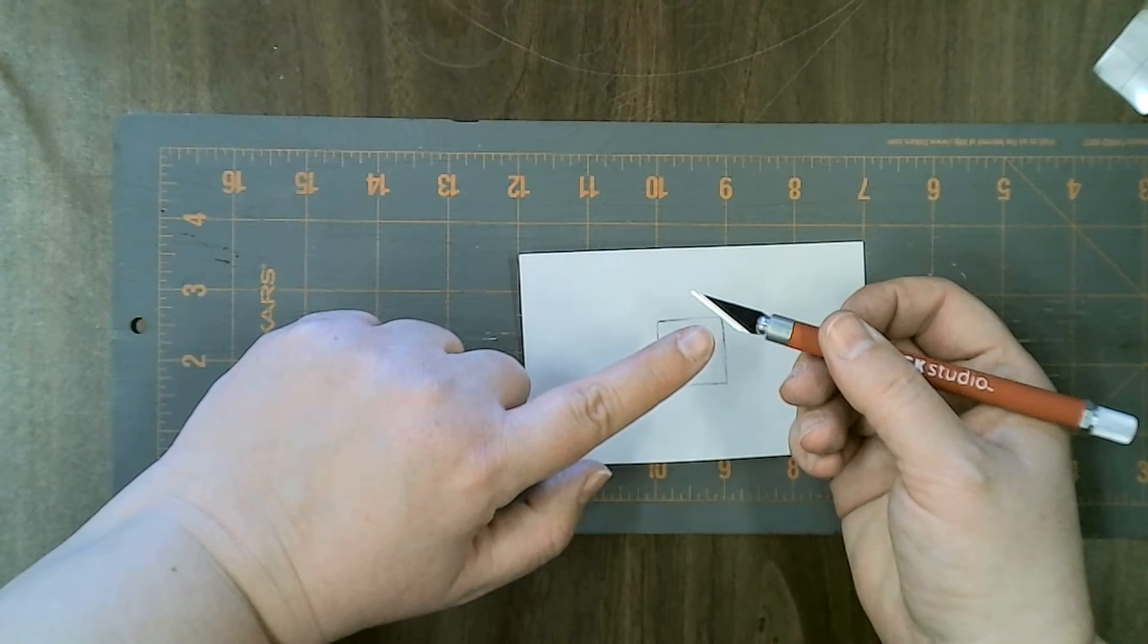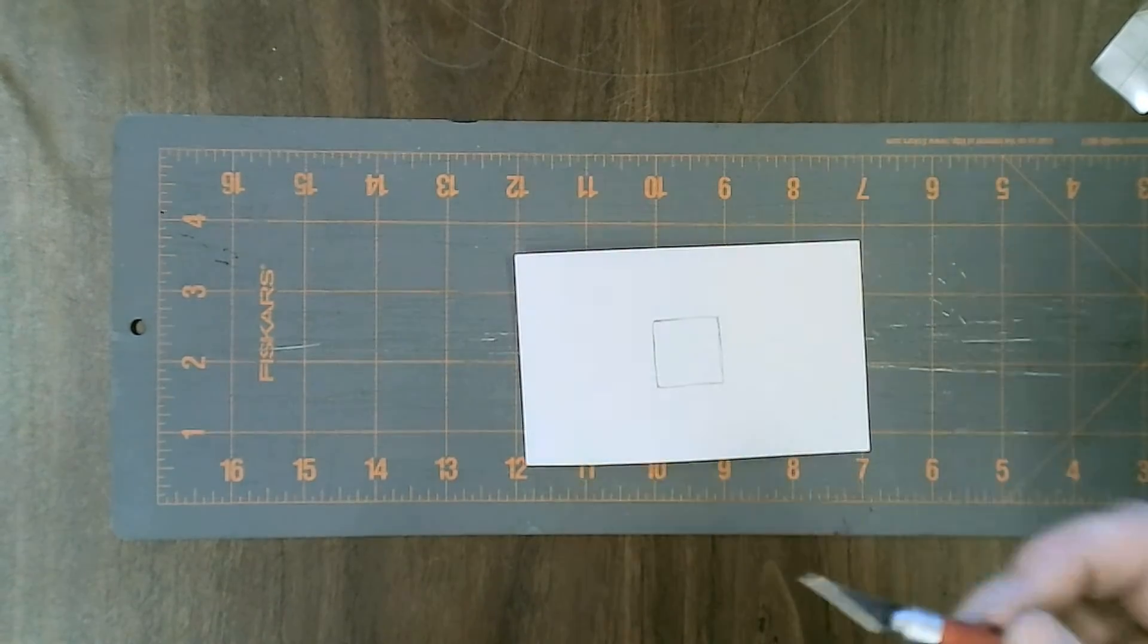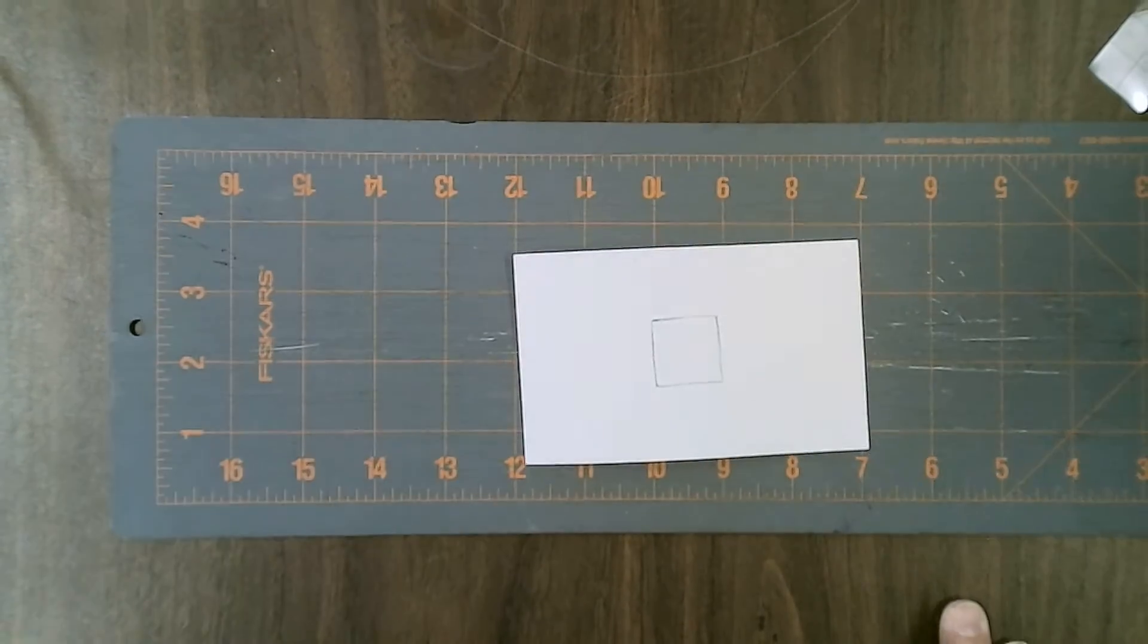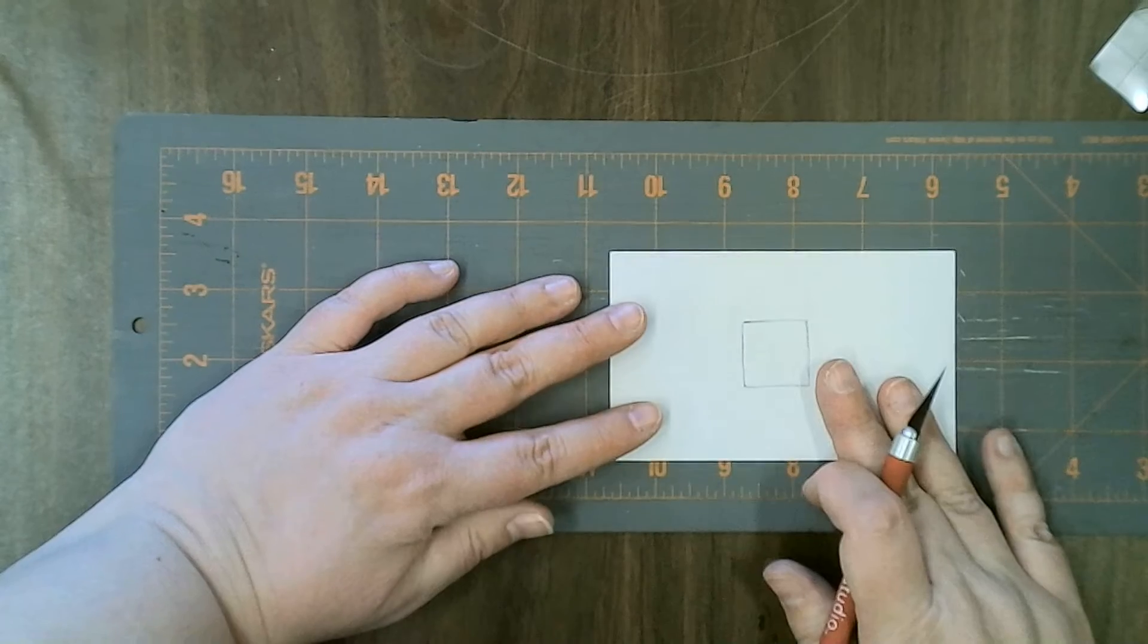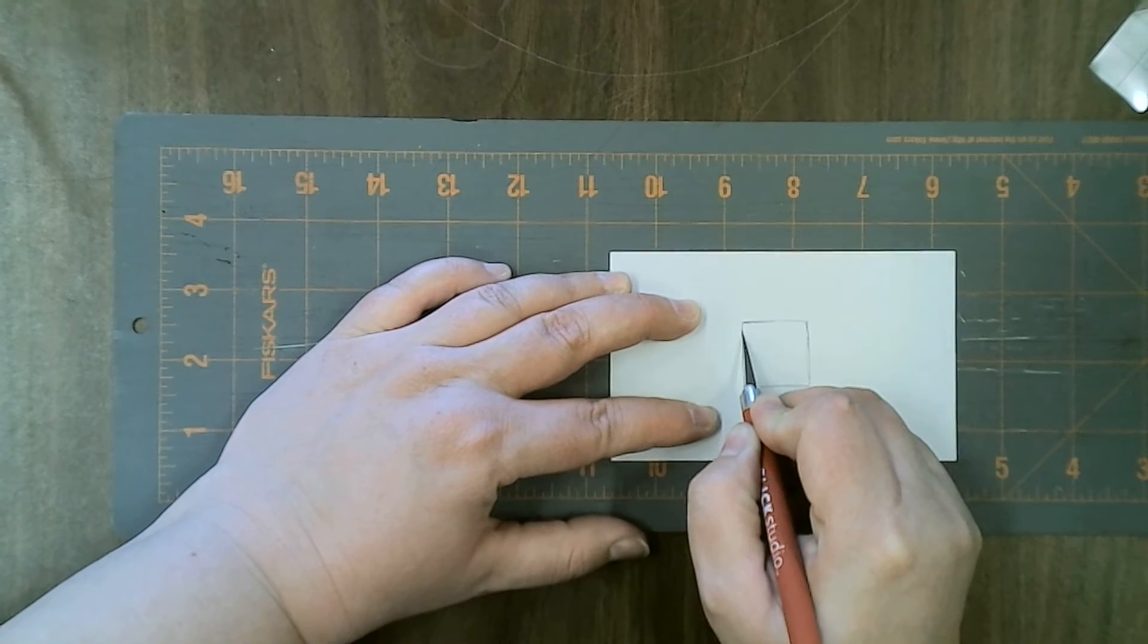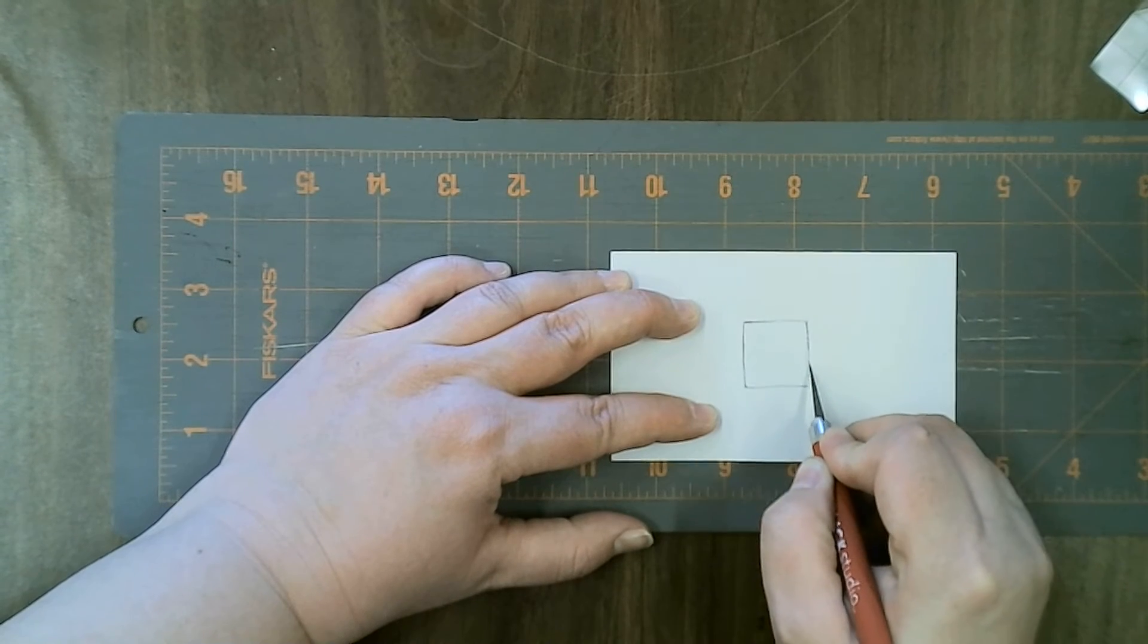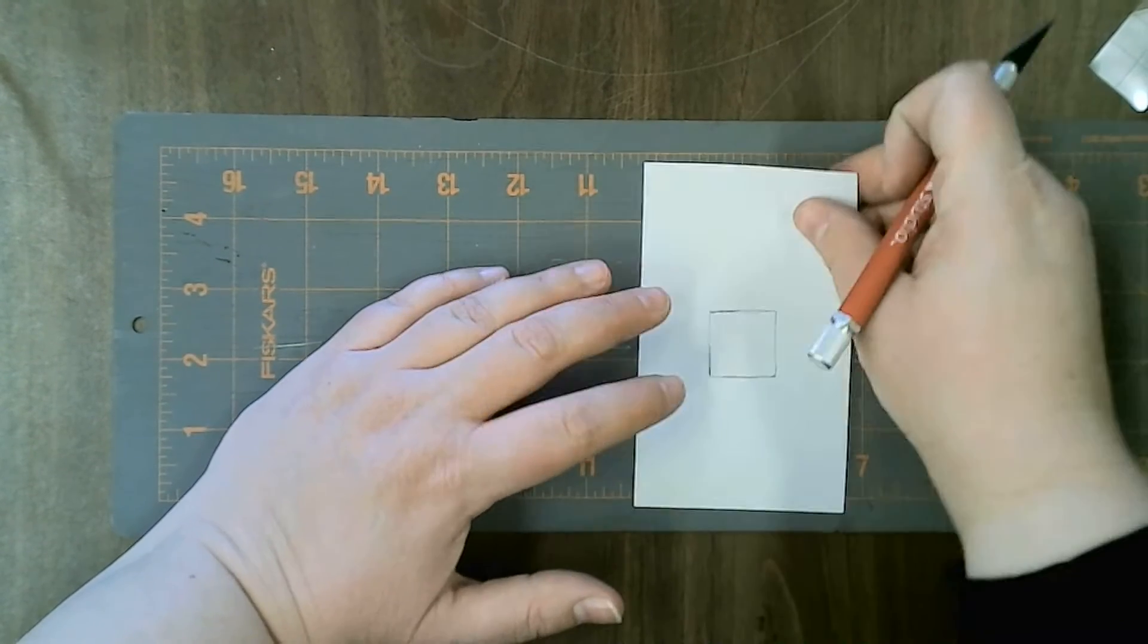Remember that the angled side of the blade needs to face down and you're slicing with the tip of the blade. I would do two sides at once with medium pressure, and then turn it.